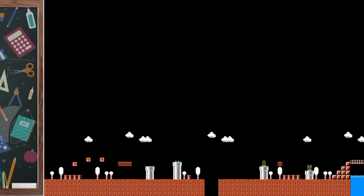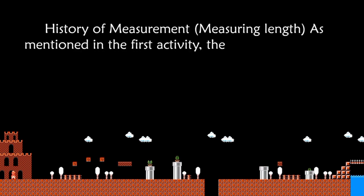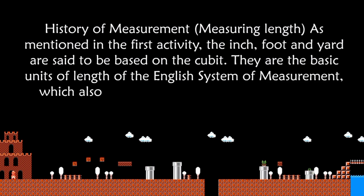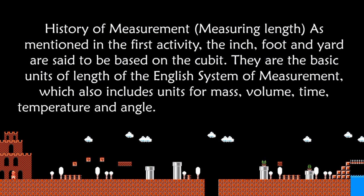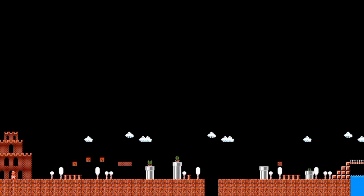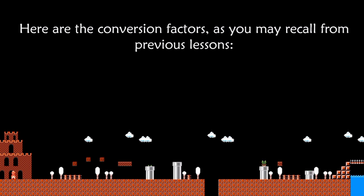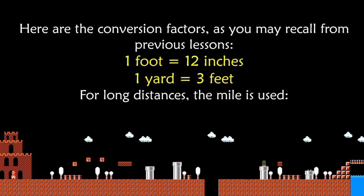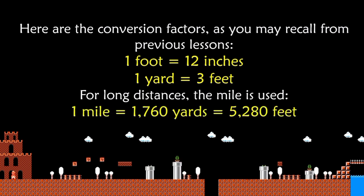What Is It — History of Measurement. As mentioned in the first activity, the inch, foot, and yard are said to be based on the cubit. They are the basic units of length of the English system of measurement, which also includes units for mass, volume, time, temperature, and angle. Since the inch and foot are both units of length, each can be converted into the other. Here are the conversion factors: one foot is equal to 12 inches, one yard is equal to three feet. For long distances, the mile is used — one mile is equal to 1,760 yards, or 5,280 feet.